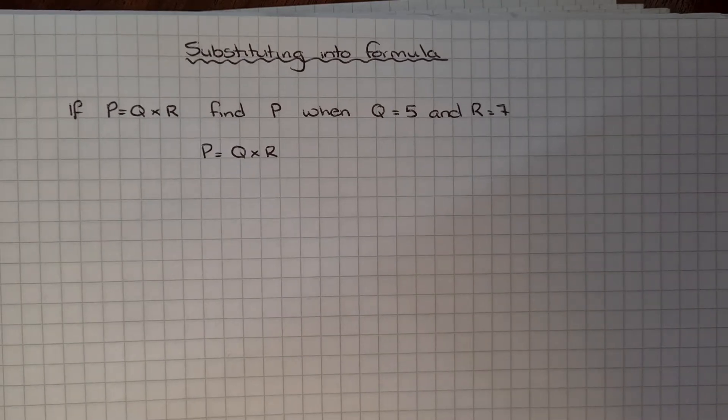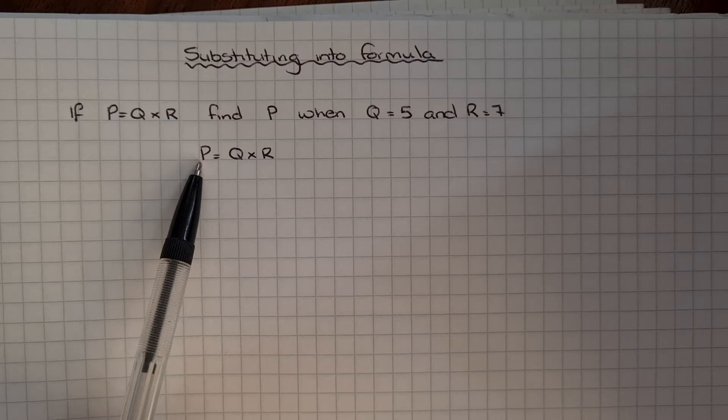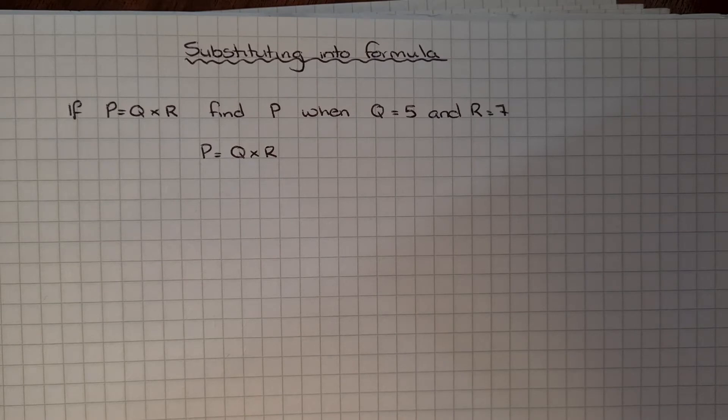First thing you would do is write down the formula. Now, the difference between this and the last lesson is we've now got this letter on the left, but that's okay. We're just going to keep that letter on the left and work on the right hand side of the equation.